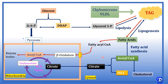What happens to the glycerol that is the product of lipolysis? This glycerol is converted back into dihydroxyacetone phosphate, which is an intermediate of glycolysis, and it has two fates: it can undergo glycolysis to form pyruvate, or it can be utilized for the synthesis of glucose — that is, it can undergo gluconeogenesis. So these are the major metabolic pathways that occur in well-fed condition and in starvation.